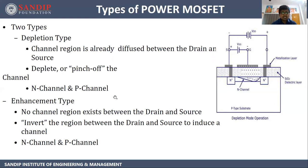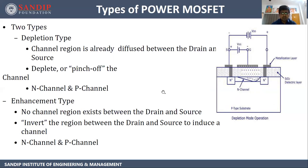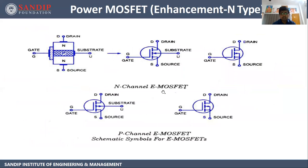In enhancement type, there is no channel initially existing between the two N+ layers. But as we bias it and increase the bias voltage, the channel gets created, enhancing the conductivity. So the name is enhancement type. Both types of power MOSFET are of two subtypes: one is N channel and another one is P channel.